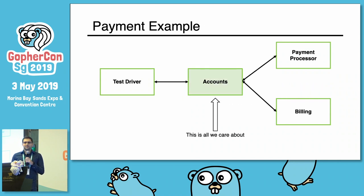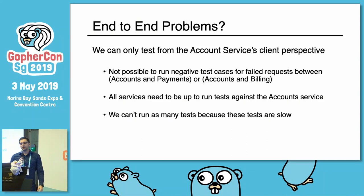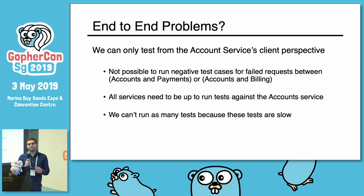But there are some problems with this. We only care about the account service, so we really want to make sure that it works in both positive and negative test cases. We don't want to have the payment processor and billing processor up all the time — those services aren't necessary for validating that the account service is doing its job. We can only test from the account client's perspective with end-to-end. It's not possible to run negative test cases for failed requests between accounts and payments or accounts and billing. And we can't run as many tests because these tests are slow.